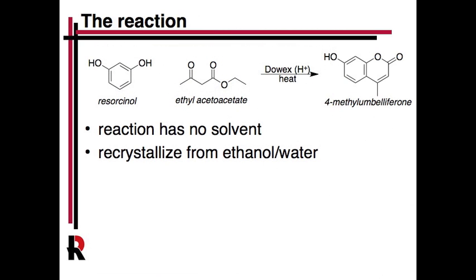The reaction we're going to do involves making one of the simpler fluorophores — 4-methylumbelliferone. It's actually not used that much because it's just not super intense. It uses resorcinol and ethyl acetoacetate. Ethyl acetoacetate is something we've seen before — it's used a lot in Claisen reactions and has its own enolate chemistry, though surprisingly we don't use enolate chemistry in this one. The reaction has no solvent since acetoacetate is a liquid, and then we'll recrystallize from ethanol and water, using Dowex beads which give off acid.